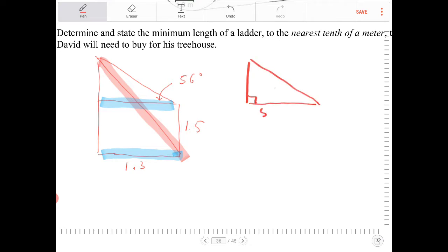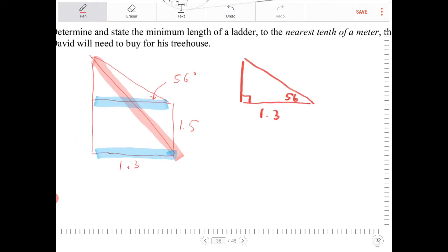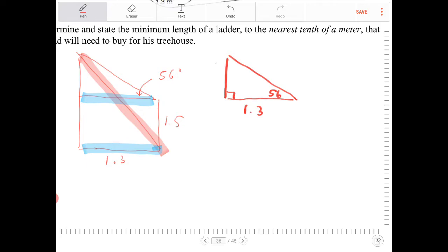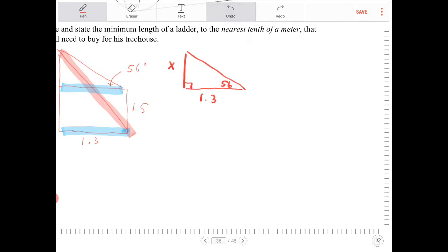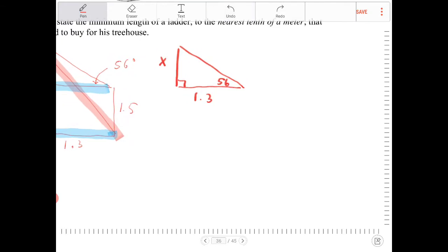So 1.3 and 56, and this is 90, right? So I can figure out what this length is. I'm going to call that x. I know that x is opposite of 56 degrees, and 1.3 is adjacent to 56 degrees. So I can use the tangent ratio. Tangent of 56 is equivalent to x over 1.3. And I can solve for x now. So x is equivalent to 1.3 tangent of 56.